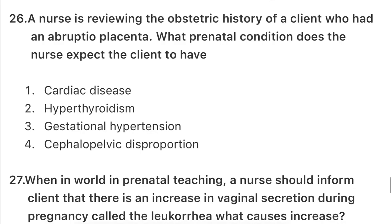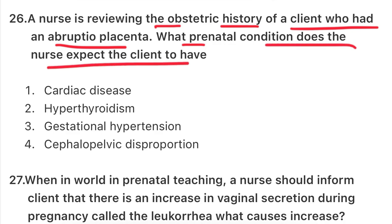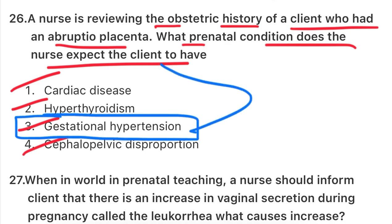Next question: a nurse is reviewing the obstetric history of a client who had an abruptio placenta. What prenatal condition does the nurse expect the client to have? The options are: cardiac disease, hyperthyroidism, gestational hypertension, or cephalopelvic disproportion. If you know the topic of gestational hypertension, the complication associated with it is abruptio placenta. So the answer is gestational hypertension.